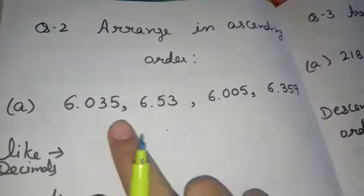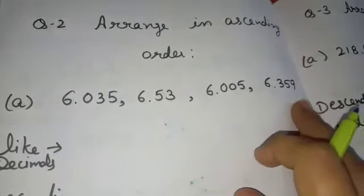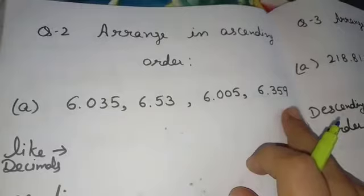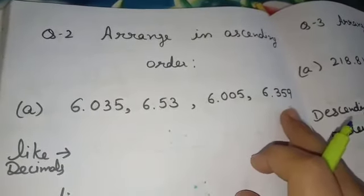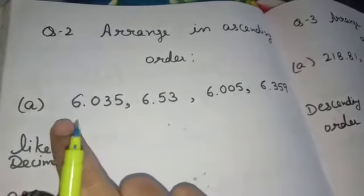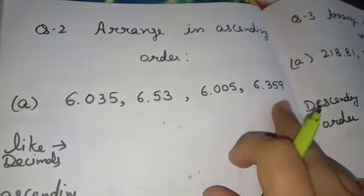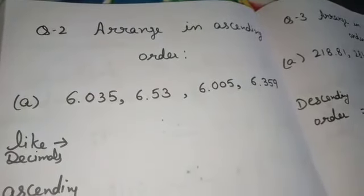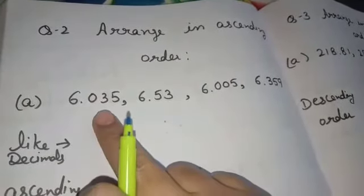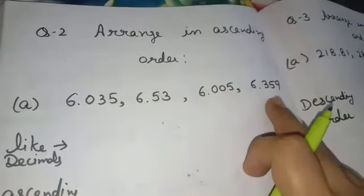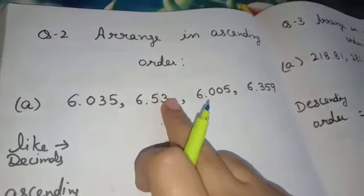In the first part, we are given 4 decimal numbers and we have to arrange them in ascending order. As we discussed earlier, firstly we should make all the decimals like decimals — meaning the same number of decimal places. As one number has 3 places after the decimal, and another has 2, we will add one zero to make them equal before we compare.